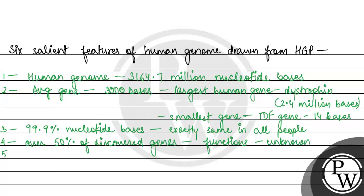The fifth salient feature of the human genome is that less than 2% of the genome codes for proteins.